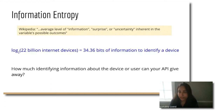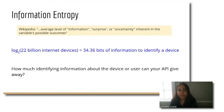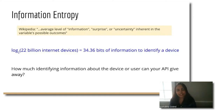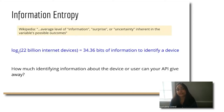An important concept to keep in mind here is entropy. Our estimation is that it takes about 34 bits of information to identify a unique device, computed based on the number of connected internet devices and then taking log base 2. When analyzing the potential for a web API to reveal fingerprints, we typically think about how many bits of information it's revealing and what that entropy distribution looks like. Our goal is to reduce the amount of information an API can give away while still accommodating the usefulness of that API.